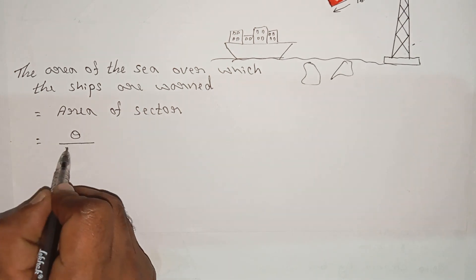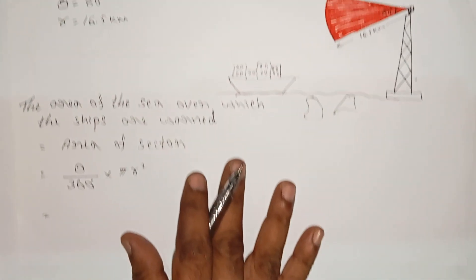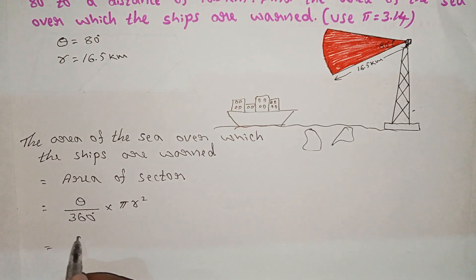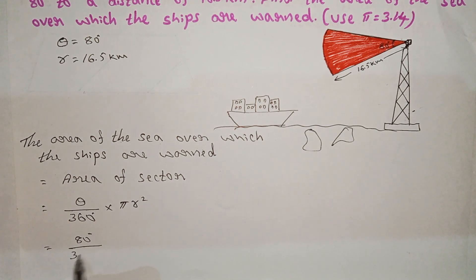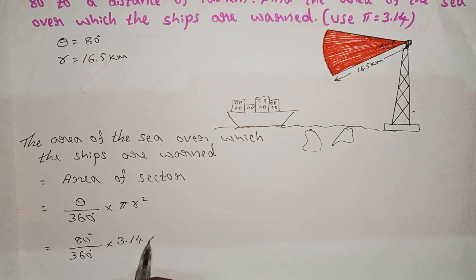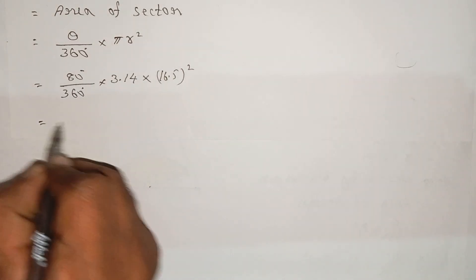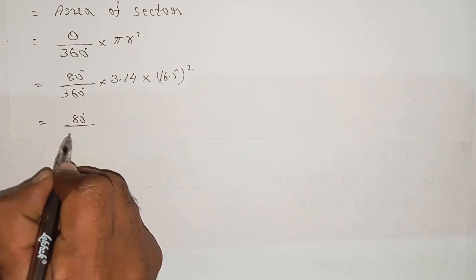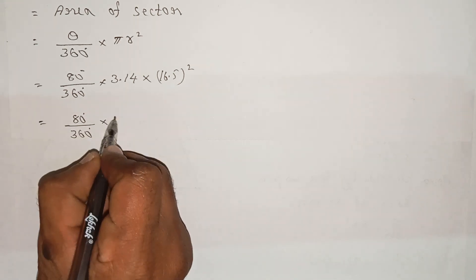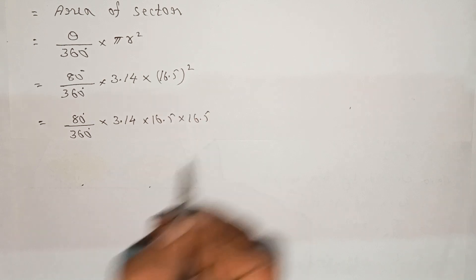The formula is: area of sector = (theta / 360) × pi × r². So that is 80 degrees divided by 360 degrees, into pi value 3.14, into radius 16.5, whole squared. So theta is equal to 80 divided by 360, into 3.14, into 16.5 into 16.5.